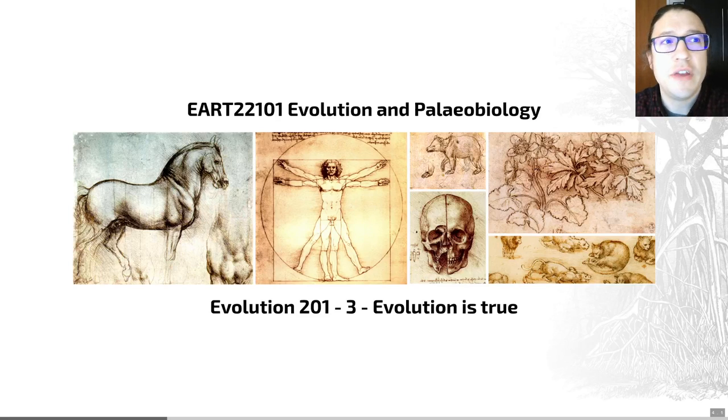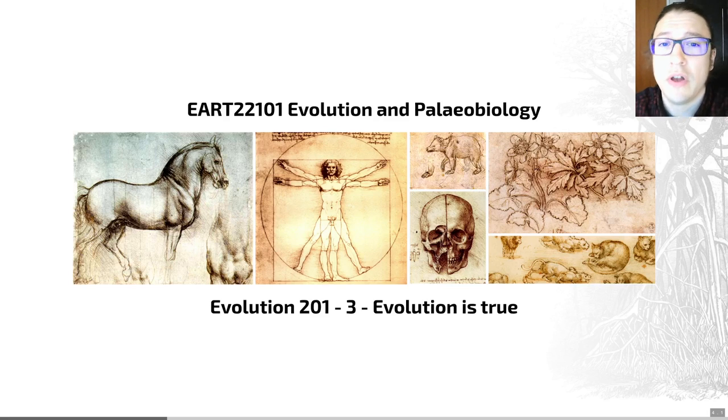Hello there and welcome to video number three in which we're going to look at the multiple lines of evidence that we can use to show that evolution is true. Building upon some of the philosophical questions that we saw in the last video, we're going to be looking here at the evidence for natural selection and evolution and how well supported a theory this is.